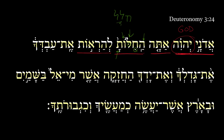You have begun to show. Here's the Hiphil of the root ra'ah — it's a Hiphil infinitive construct with a lamed preposition. So, you have begun to cause to see, or to show. What are you showing? You're showing your servant your greatness. We've got a doubled object and a tripled object: your hand, the mighty one, and your mighty hand. So you're showing your servant these things — your greatness and your mighty hand.